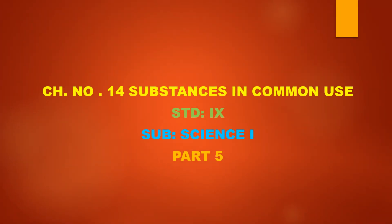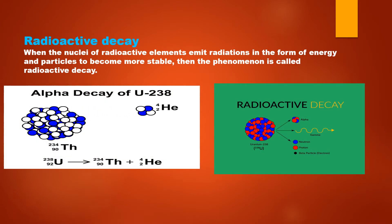Hello students, welcome to part 5 of the video of chapter number 14 substances in common use for standard 9th. We have already studied that the nuclei of radioactive elements is unstable. Such nuclei emit radiations in the form of energy and particles, and this is done in order to make the nuclei more stable. The process of emission of energy and particles from the nuclei of radioactive elements to make it more stable is called as radioactive decay.